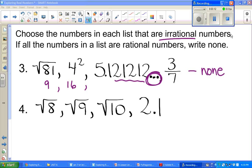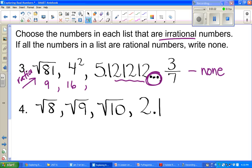We're going to go back through number three and reiterate that square root of 81 is rational because it simplifies to 9. 9 is a rational number. And 4 squared is also rational because it simplifies to 16. Your decimal number is rational because it's a repeating decimal. And then 3 sevenths is also rational because it is a fraction.